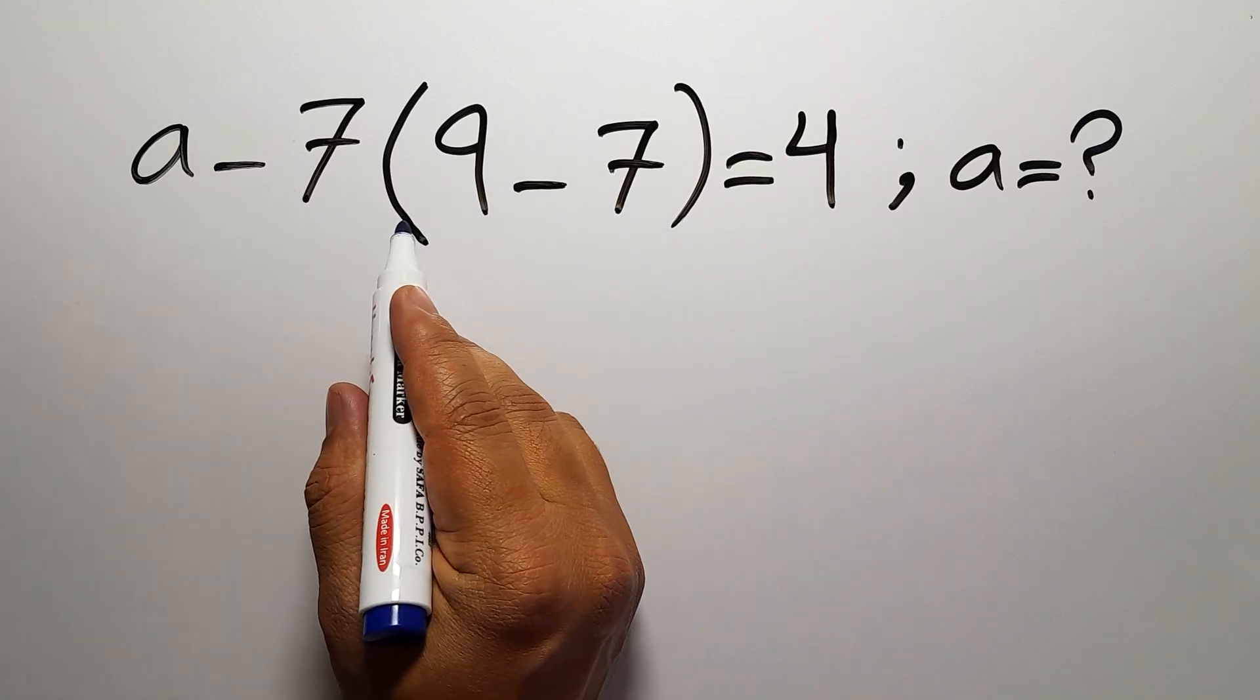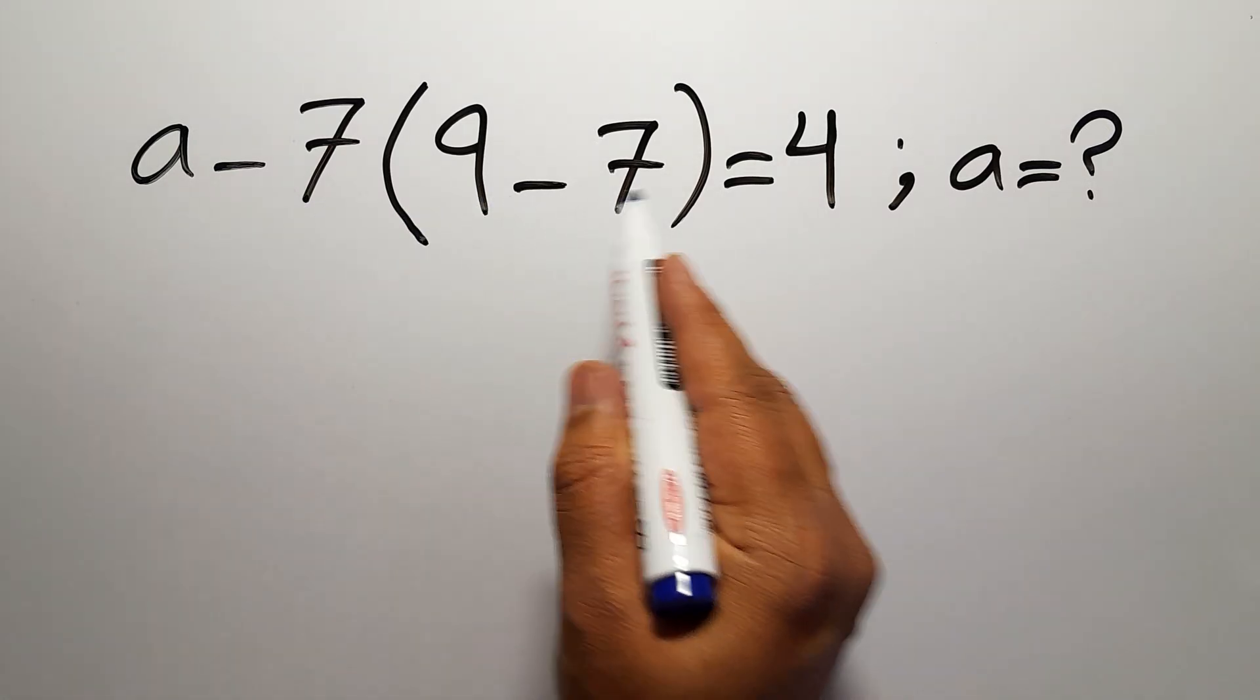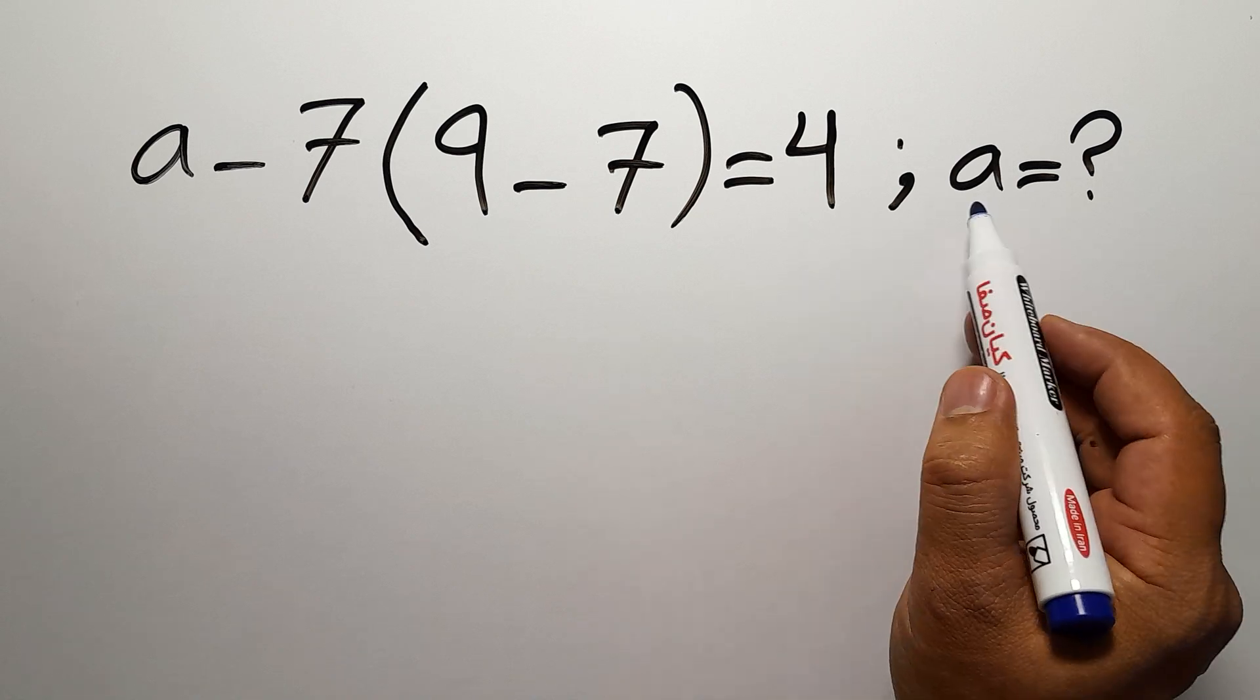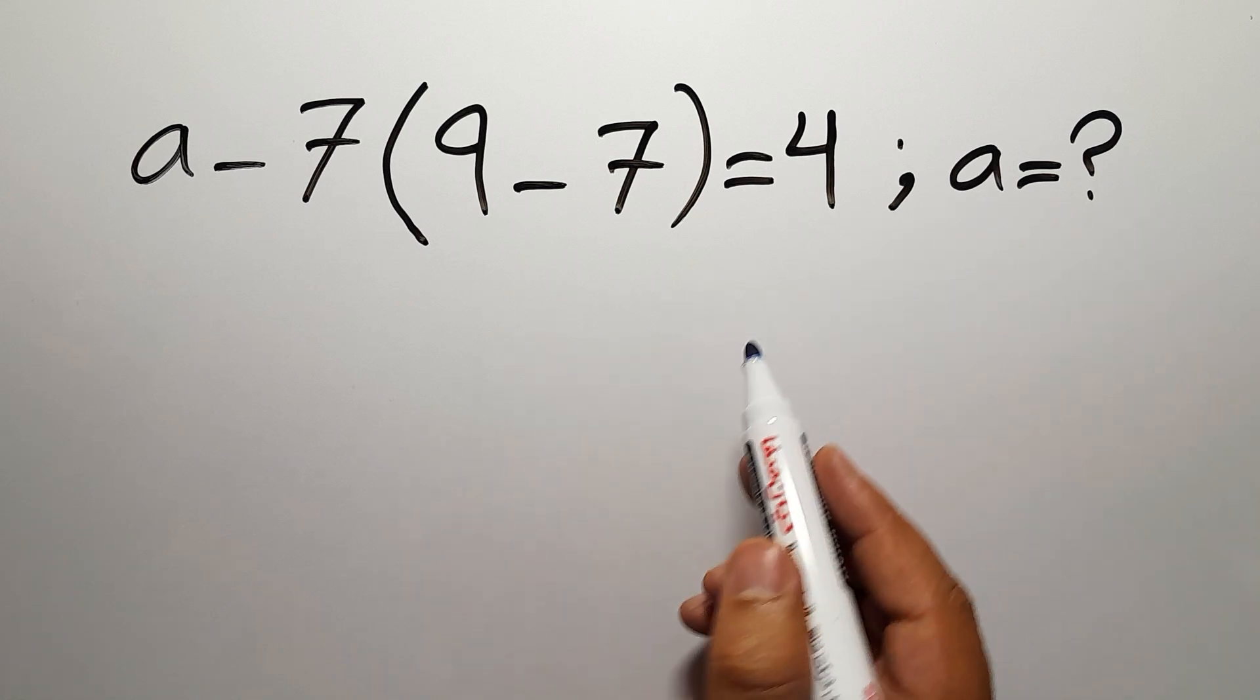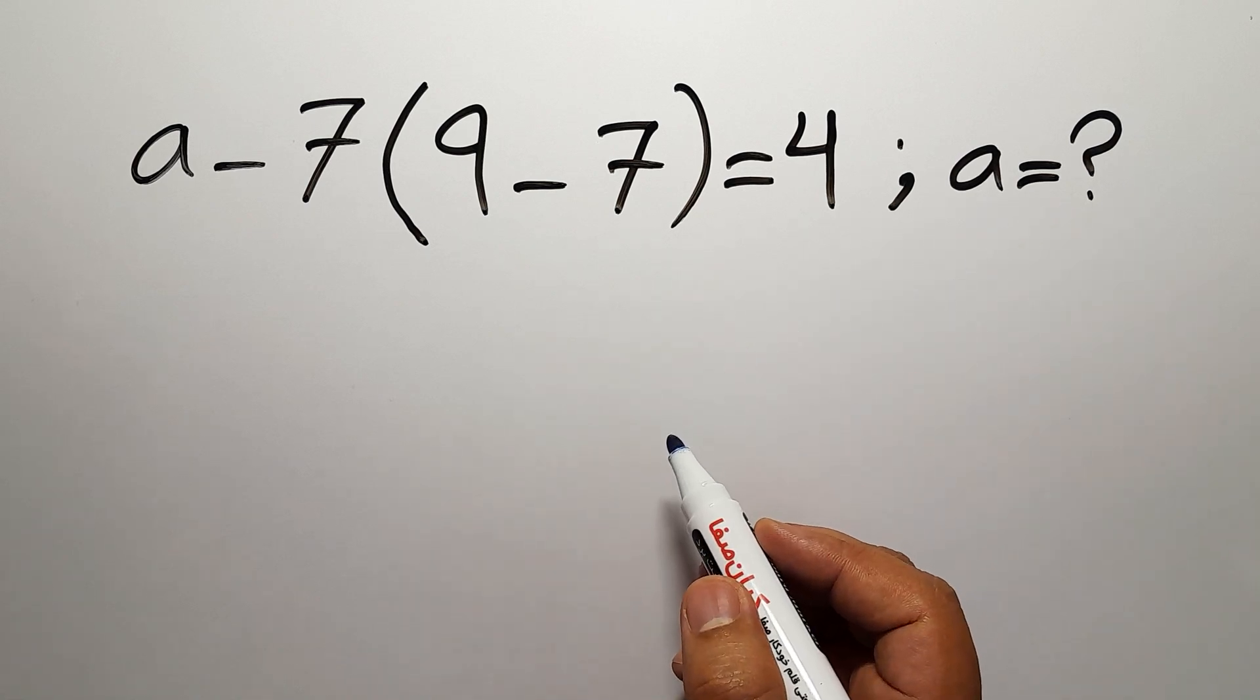A minus 7 times 9 minus 7 equals 4. Our goal is to find the value of A. Are you ready to solve? Let's go down and get started.